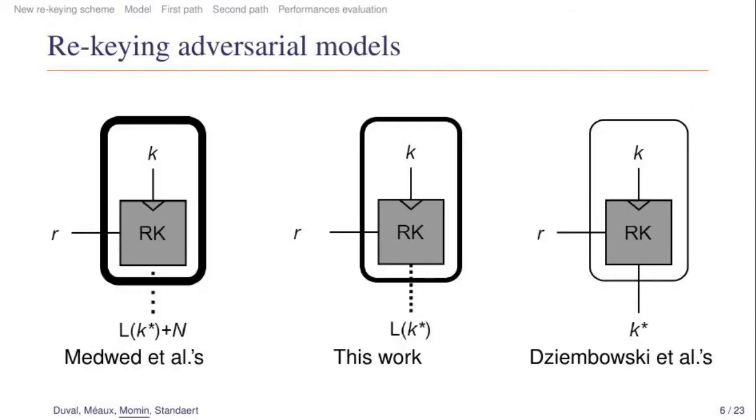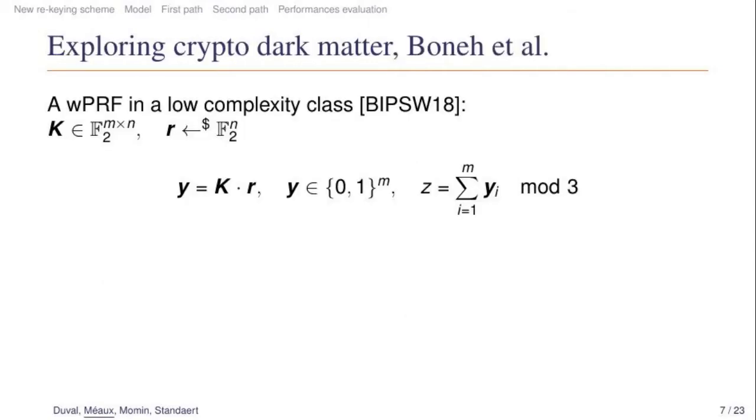Considering this background, our work aims to investigate the intermediate threat model where an adversary can observe noise-free leakage of k*. For our rekeying scheme, we took inspiration from the weak pseudo-random function of Bonnet et al.